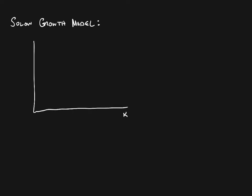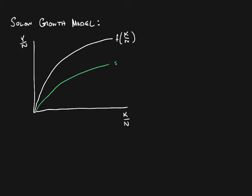We start with a graph with capital per worker on the horizontal axis and output per worker on the vertical. We've got three different things here. First is our production function — output is some function of capital per worker. Next, we have our investment per worker function, which is just some number S, between 0 and 1, multiplied by output per worker. And then we have depreciation per worker, delta K over N. Our steady state is where these two meet up — this is our steady state capital per worker level, where capital is neither rising nor falling, and the associated output level is Y over N star.